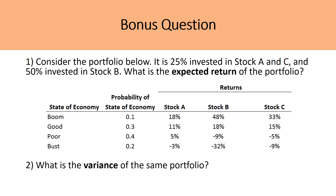For today's bonus question, there are two parts. Consider a portfolio that is 25% invested in stocks A and C, and 50% in stock B, across four economic states instead of two. In part one, find the expected return of the portfolio — remember to account for the weightings of each stock. In part two, find the variance of that same portfolio. Remember: do not calculate individual stock variances and weight them. You must calculate the expected portfolio return in each of the four states and then follow the stock variance procedure.